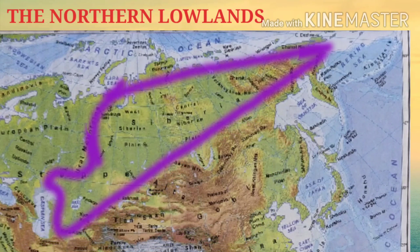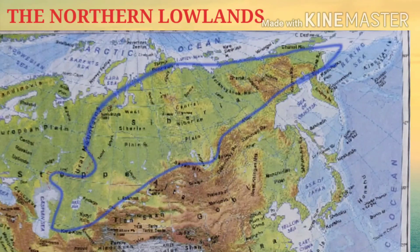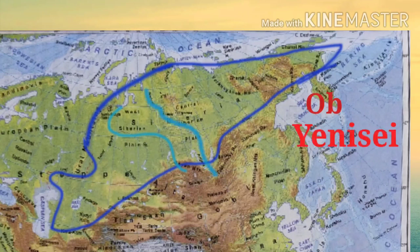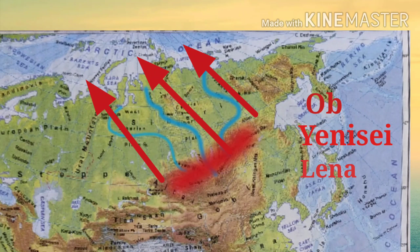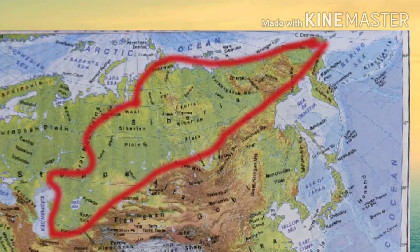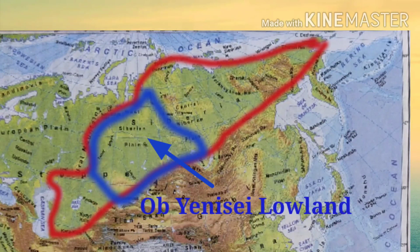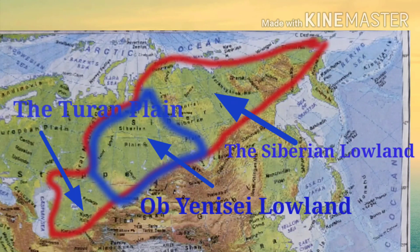They slope from central mountains to the Arctic Ocean. This region is drained by three long rivers: Obe, Yenisei, and Lena. These rivers originate in the central mountain ranges, flow northwards, and finally fall into the Arctic Ocean. This vast lowland can be subdivided into three parts: the Obe-Yenisei Lowland in the northwest, the Turan Plain in the southwest, and the Siberian Lowland in the northeast.